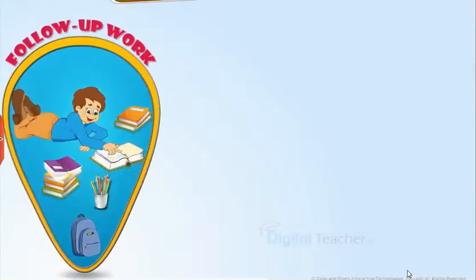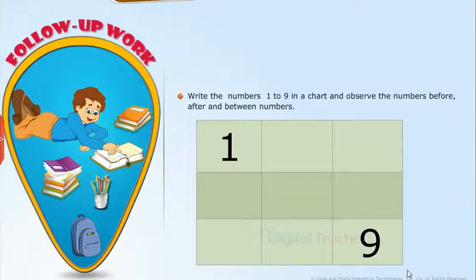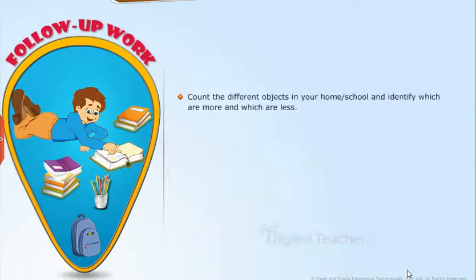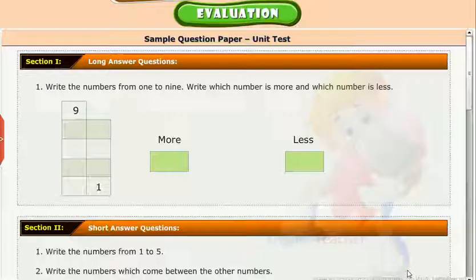Follow-up work: Take up the following activities. Write the numbers 1 to 9 in a chart and observe the numbers before, after, and between. Count the different objects in your home or school and identify which are more and which are less. Test your understanding of the chapter by taking the mock unit test.